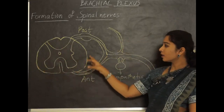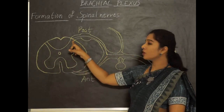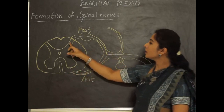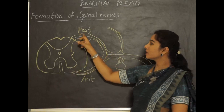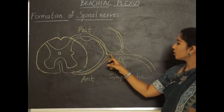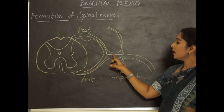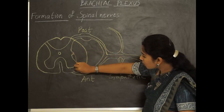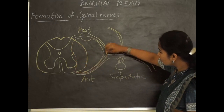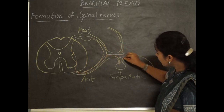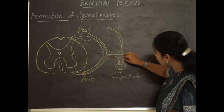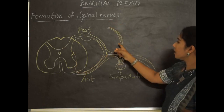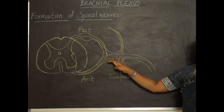This is the cut section of the spinal cord, showing the anterior horn and posterior horn. The anterior horn consists of motor nerves, which give rise to the motor root. The posterior horn consists of sensory nerves, which give rise to the sensory root. The sensory and motor roots join to form a mixed spinal nerve. Along with the motor root, there are sympathetic nerves which travel along with the anterior root and end up in a sympathetic ganglion. These sympathetic fibers travel along with the anterior and posterior branches arising from the mixed spinal nerve.